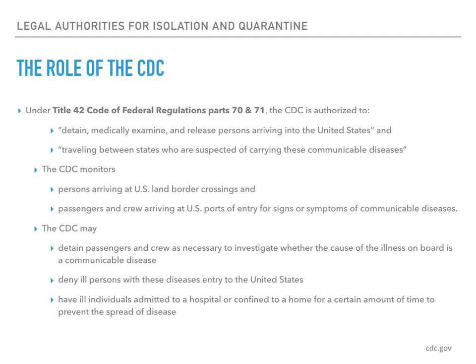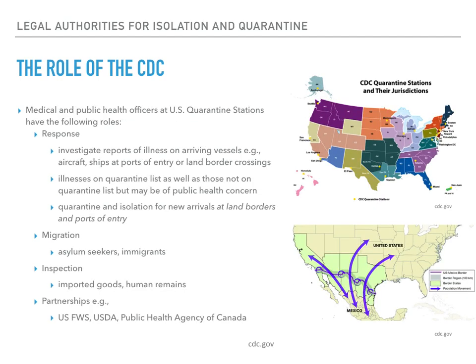If necessary, the CDC can deny ill persons with these diseases entry into the United States, have them admitted into a hospital, or confine them to a home for a certain amount of time to prevent the spread of disease. When alerted about an ill passenger or crew member by a pilot or captain, the CDC may detain passengers and crew as necessary to investigate whether the cause of the illness on board is a communicable disease.